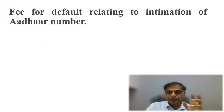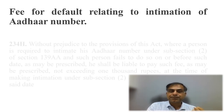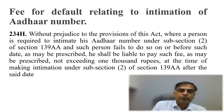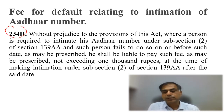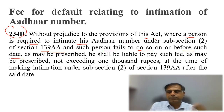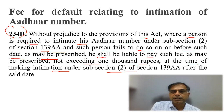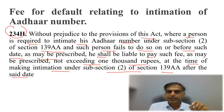A very important question that arises is: why is there a fee, and where does this levy come from? The answer lies in Section 234H of the Income Tax Act, inserted along with Section 139AA. Without prejudice to the provisions of this Act, where a person is required to intimate their Aadhaar number under Section 139AA and fails to do so on or before the prescribed date — which was 31st March 2022 — they shall be liable to pay such fees as may be prescribed, not exceeding ₹1000, at the time of making intimation under sub-section 2 of 139AA after the said date. This is where the levy of ₹1000 comes into force.